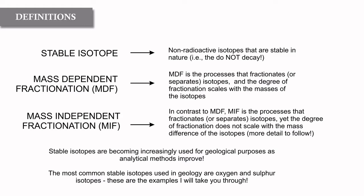Firstly we have what's known as mass dependent fractionation or MDF. MDF is the process that fractionates or separates isotopes, and the degree of fractionation between the isotopes scales with the mass of the isotopes themselves. Mass independent fractionation or MIF is different in that the isotopes do not fractionate in a way that scales with the individual masses of the isotopes - it's essentially violating mass fractionation law, and I'll discuss an example of that in the following slides.